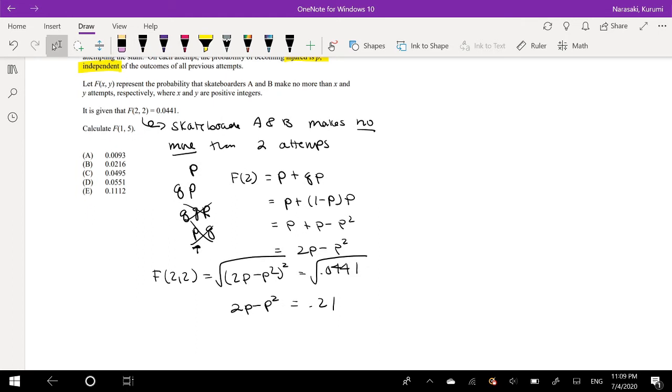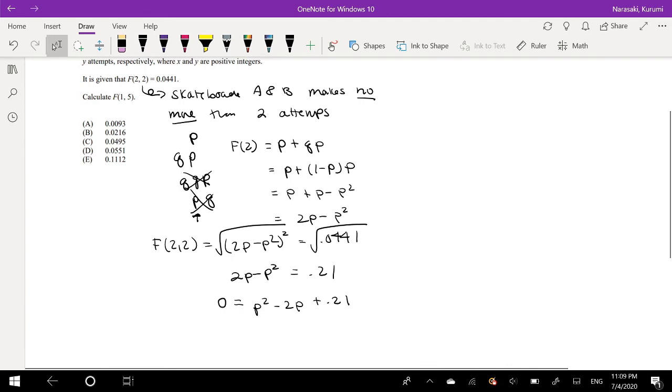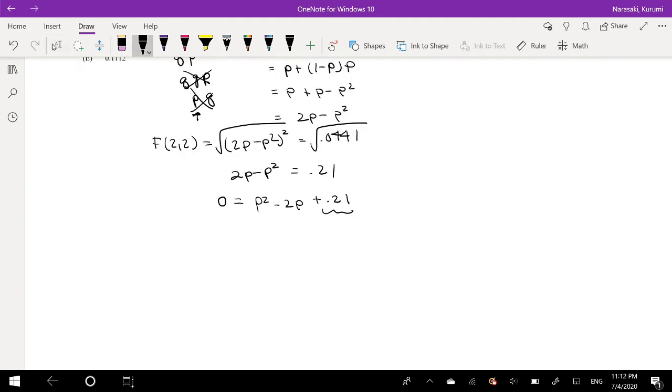I think I'm going to complete the square, so I'm going to bring everything to the other side. So it's going to be equal to 0 equals P squared minus 2P plus 0.21. So if I complete the square, so then I'm going to bring that squiggly line, this term to the other side, so it becomes negative 0.21 plus box equals P squared minus 2P plus box.